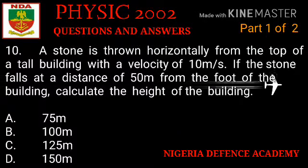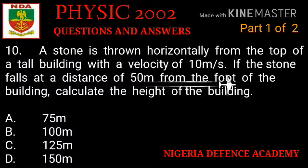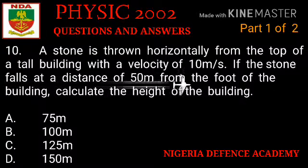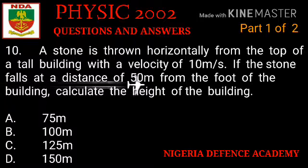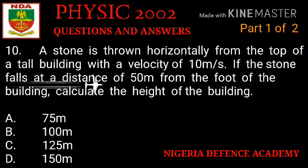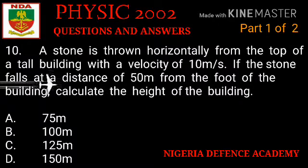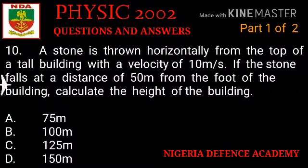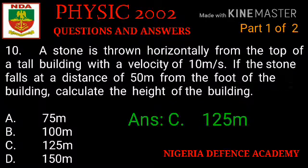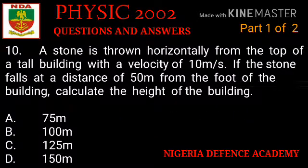Question number ten: a stone is thrown horizontally from the top of a building with a velocity of 10 meters per second. If the stone fell at a distance of 50 meters from the foot of the building, calculate the height of the building. Option A: 75 m. Option B: 100 m. Option C: 125 m. Option D: 150 m. The right answer is option C — 125 meters.